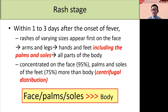Following this, the patient will enter the rash stage. Within one to three days after the onset of fever, the rash of various sizes will appear first on the face and then spread to the arms and legs, and then hands and feet including the palms and soles, and finally to all parts of the body. In monkeypox, the rash is typically concentrated on the face, palms, soles, and feet more than the body — what we call centrifugal distribution.